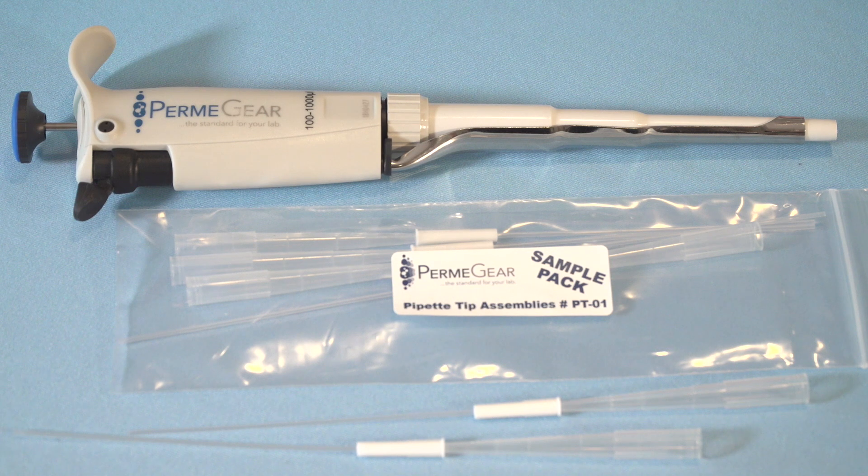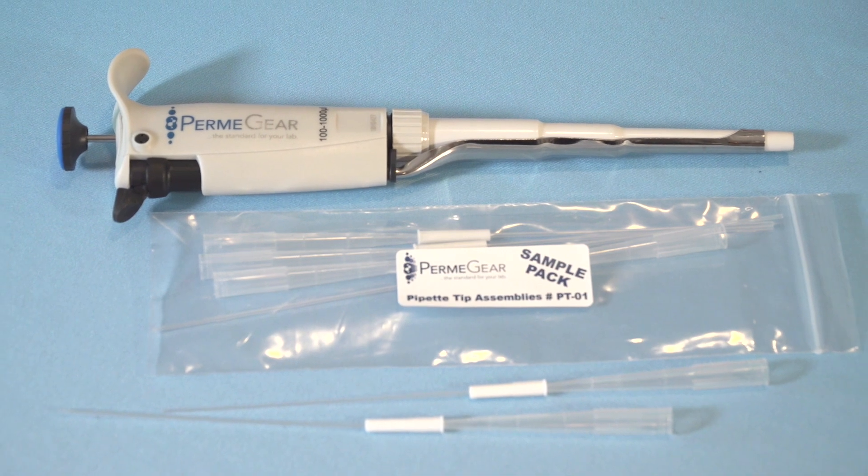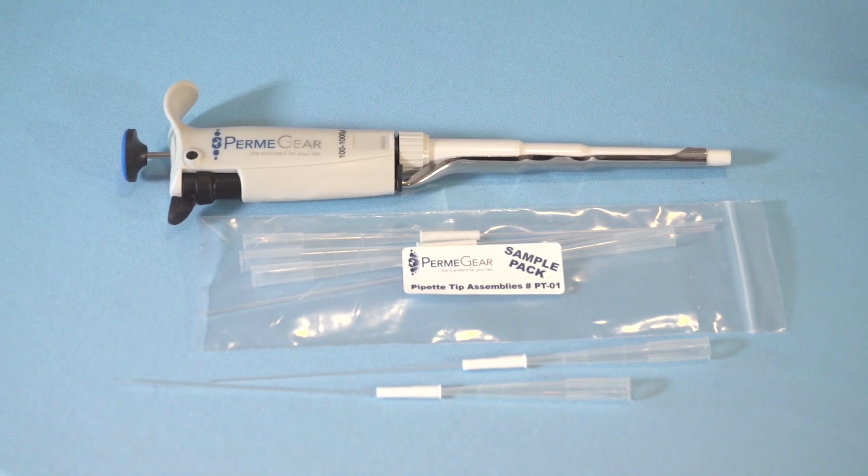If using a pipetter with a PermeGear pipette tip, it is recommended that an offset be applied to the pipetter to account for the additional resistance of the tip. Typically, this will be about 40 microliters.